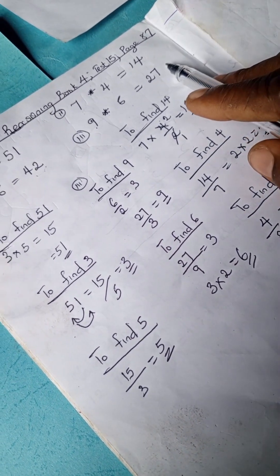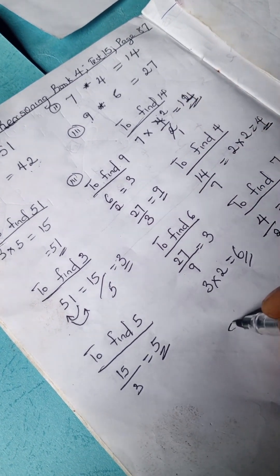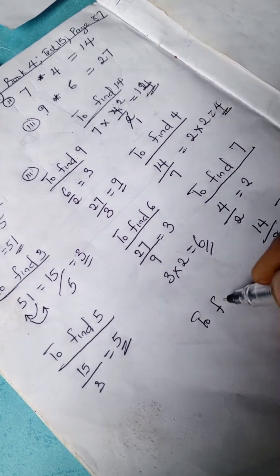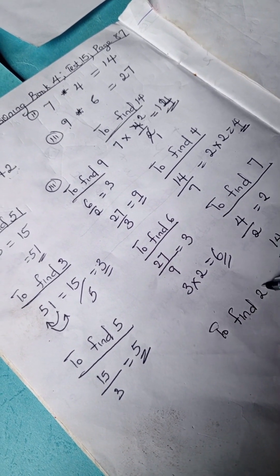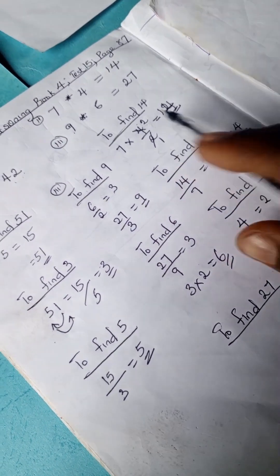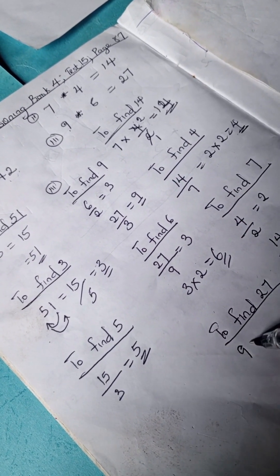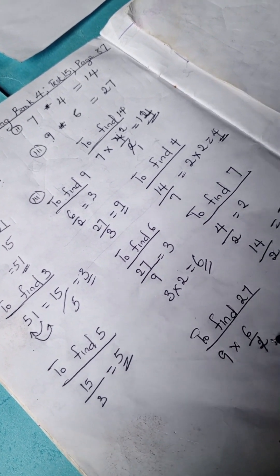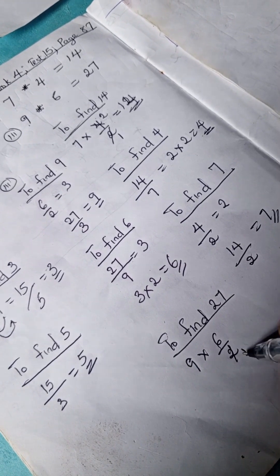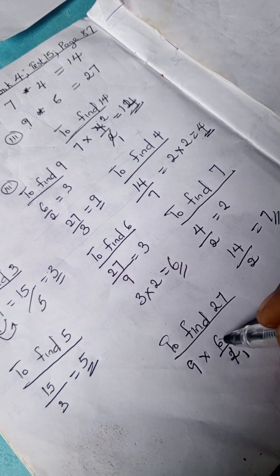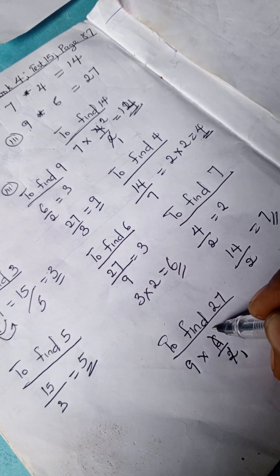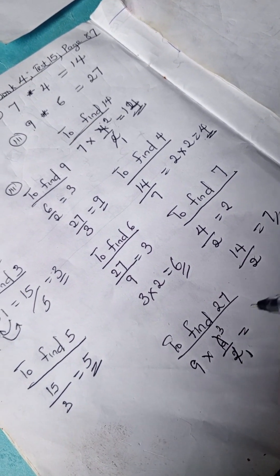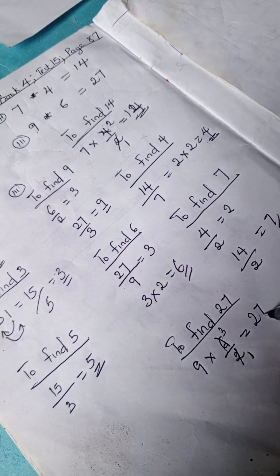So let's try to find 27. To find 27, repeat the same process here. We have 9 times 6 divided by 2, and when you divide, you have 2 can divide 6, we have 3, so 9 times 3 is 27.